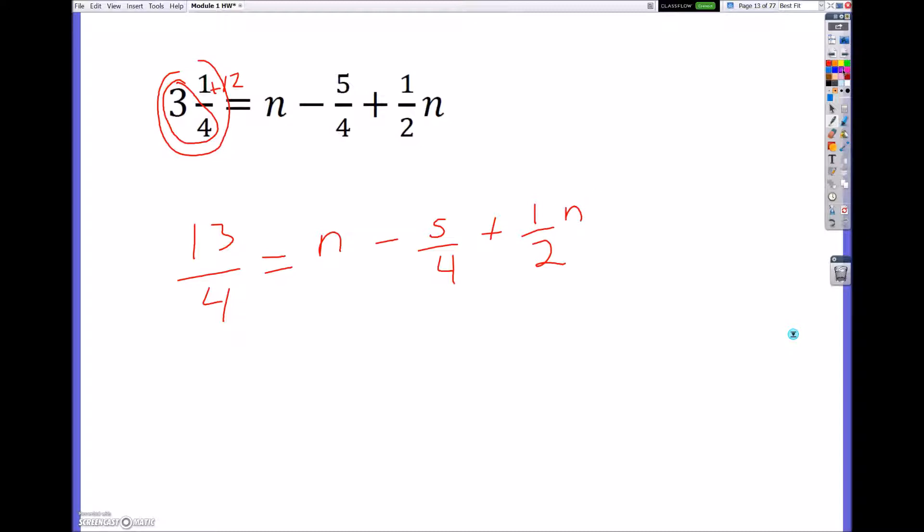And when you look at this, you want to multiply everything, every term by the LCM. So looking at 4 and 2, which are my denominators, my LCM there is going to be 4. So you're going to multiply each and every term by 4. And remember, terms are separated by plus and minus signs.